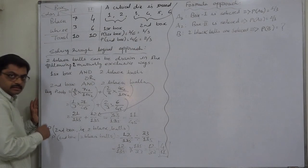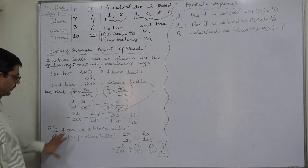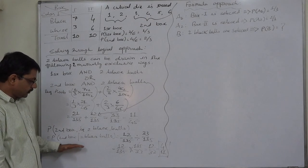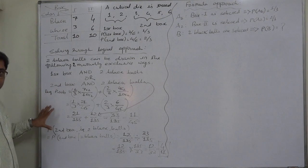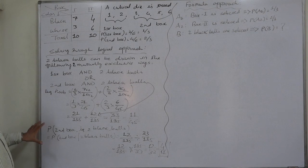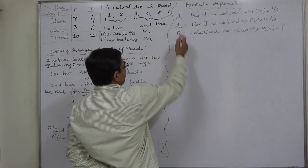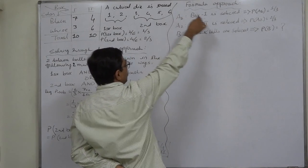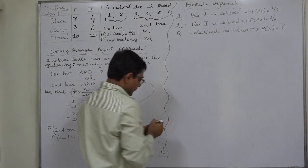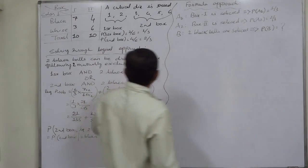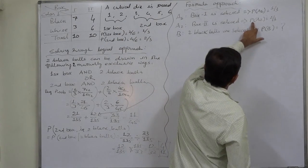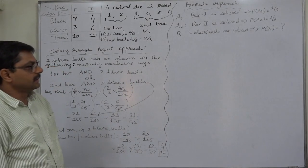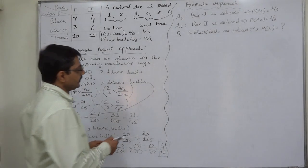My personal comment: in the logical approach, the conditional probability part becomes harder because it is not everybody's cup of tea to think through the entire problem this way. Now let us use the formula approach. We assign: event A1 = box 1 is selected, event A2 = box 2 is selected, event B = two black balls are selected. P(A1) = 1/3, since die shows 1 or 2; P(A2) = 2/3.